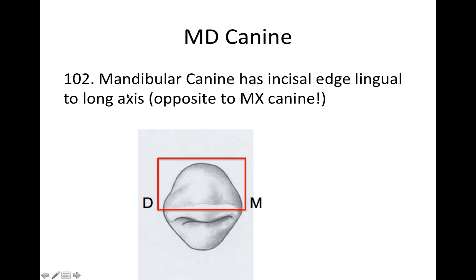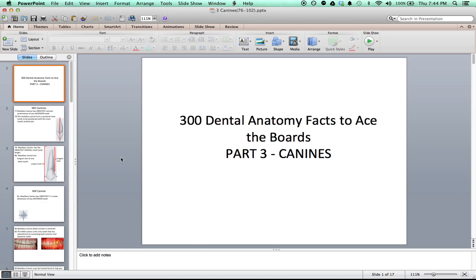The mandibular canine has an incisal edge that is lingual to the long axis — this is opposite to the upper canines. So when viewing the mandibular canine from the occlusal, you're going to see more of the facial aspect of it. That's it — thanks for listening, keep studying, leave any questions below, don't forget to like and subscribe, and keep up the good work.